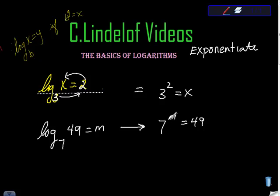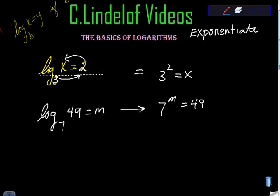So in this case, it's relatively simple. You can see that 7 squared is equal to 49. Therefore, m would equal 2.